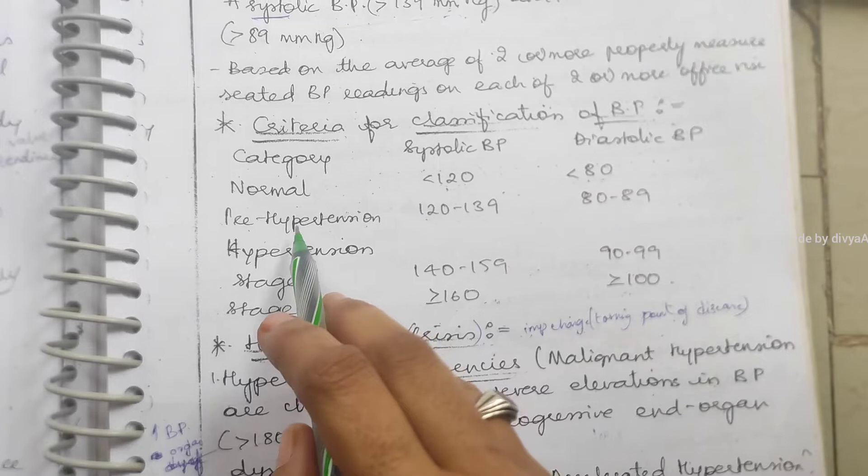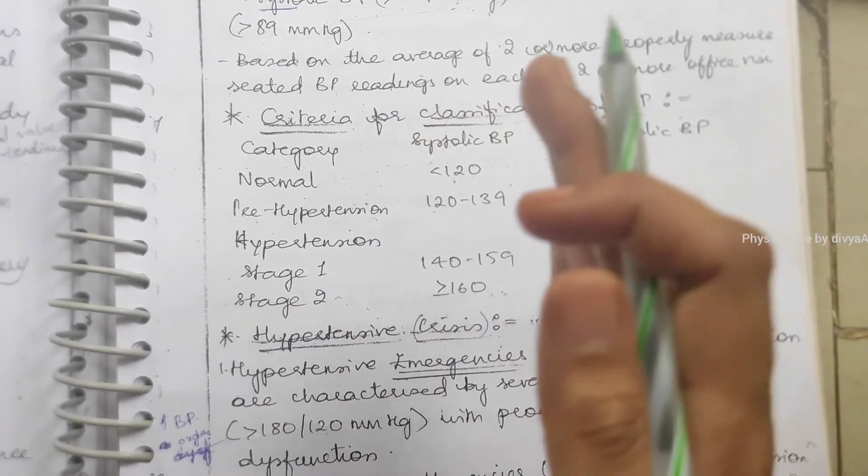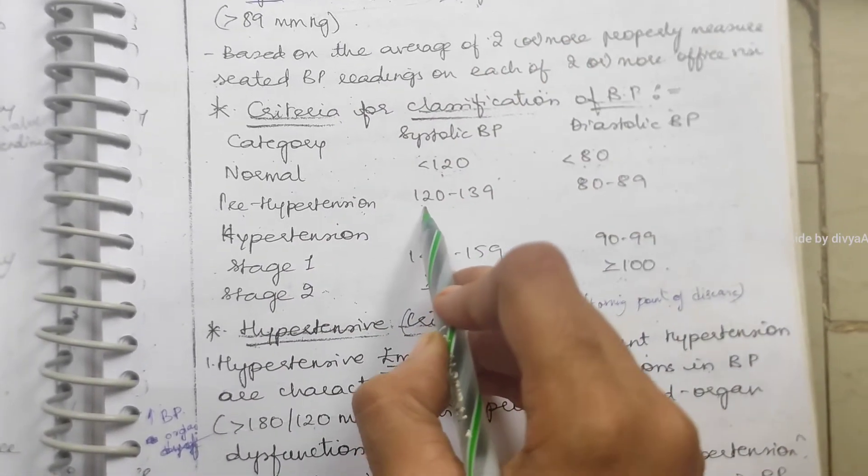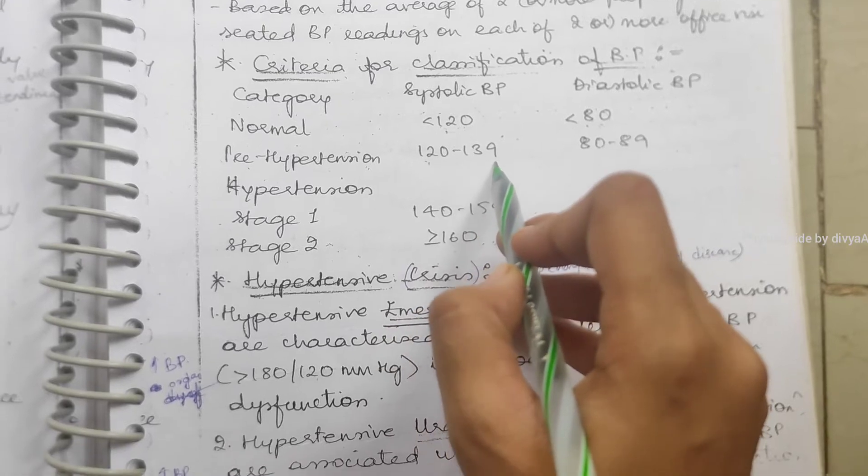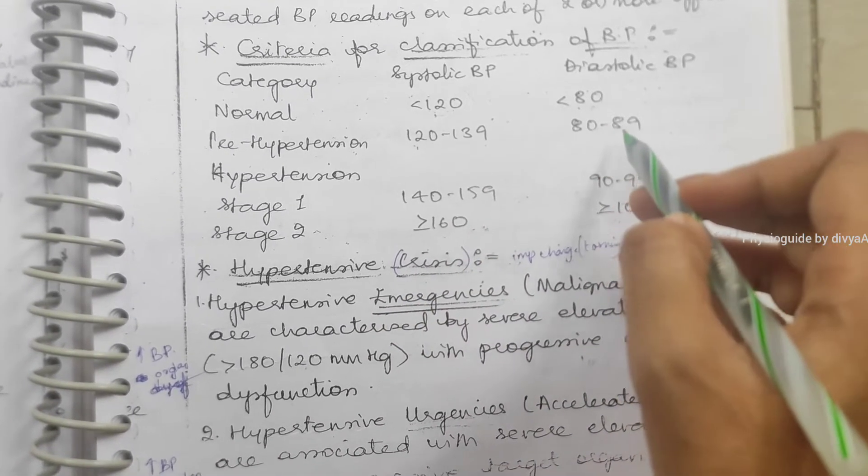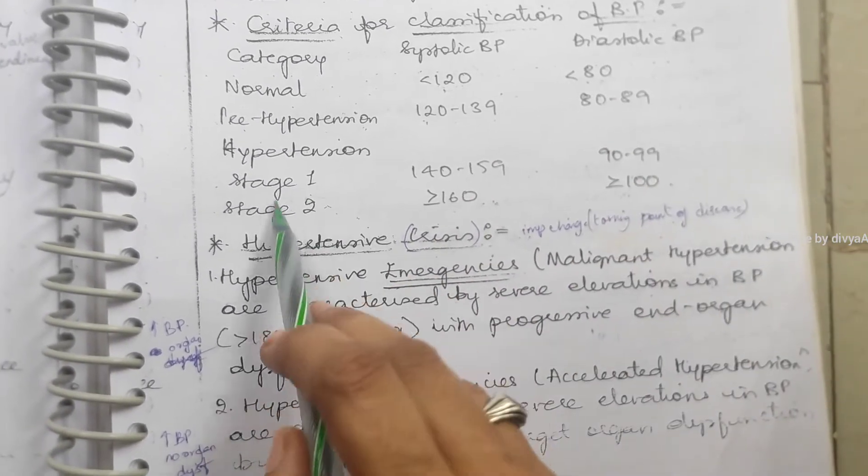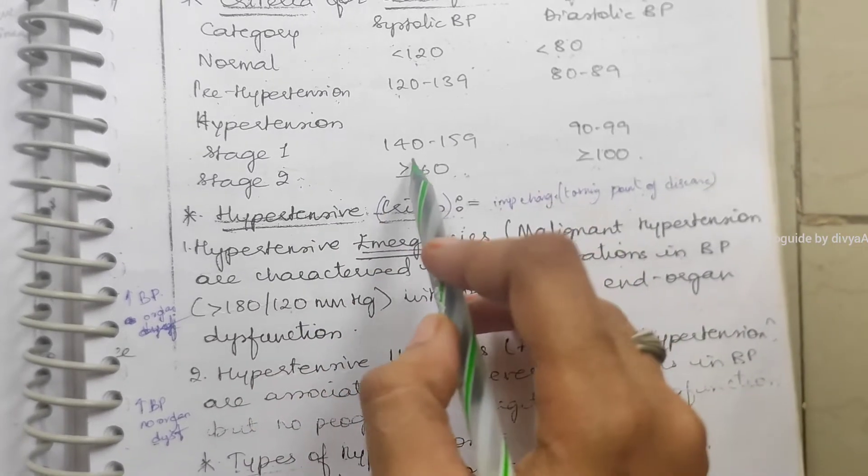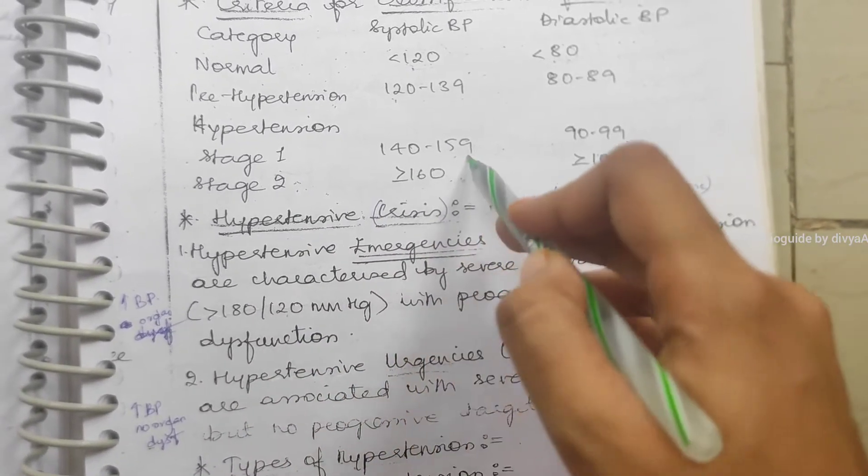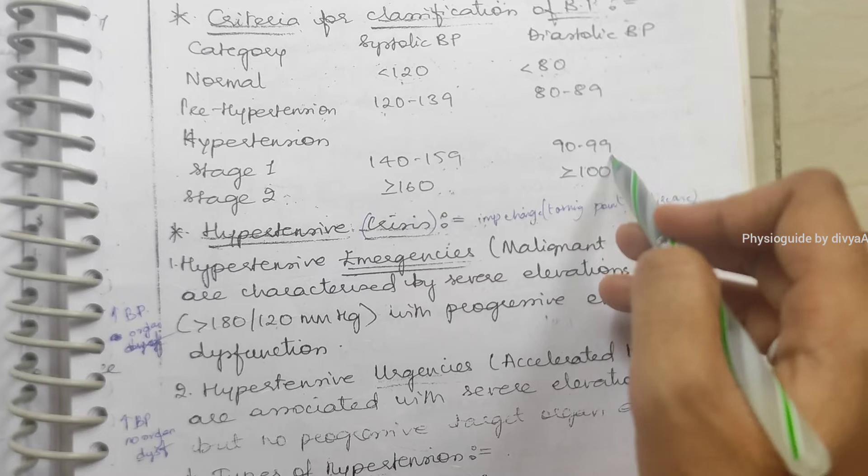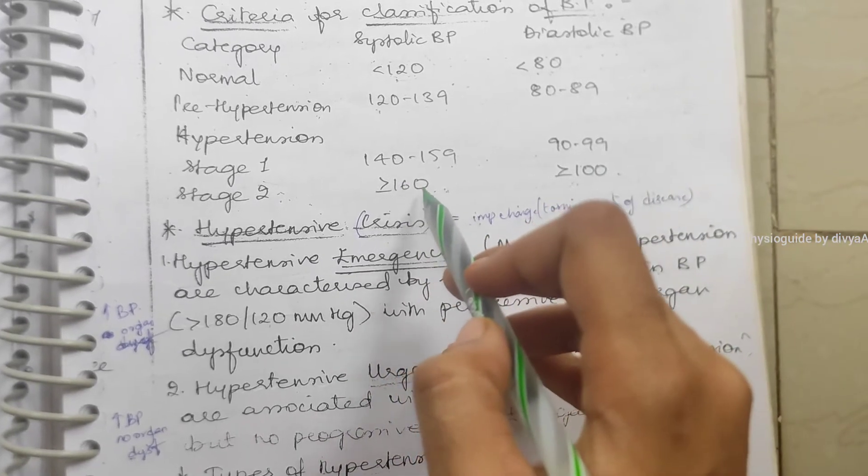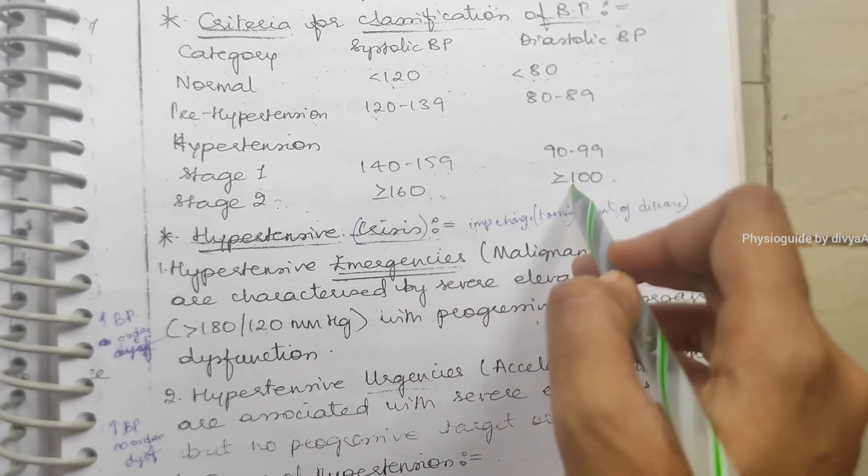Hypertension is divided into two stages. 140 to 159 systolic, this is stage 1, with diastolic 90 to 99. If it is more than 160 systolic and diastolic if it is more than or equal to 100, then this is stage 2 hypertension.